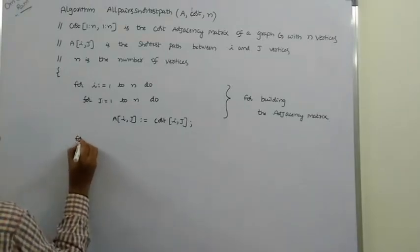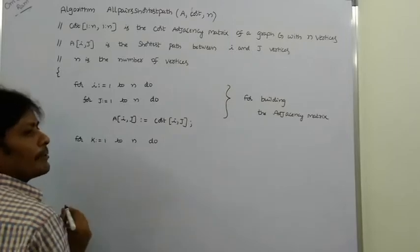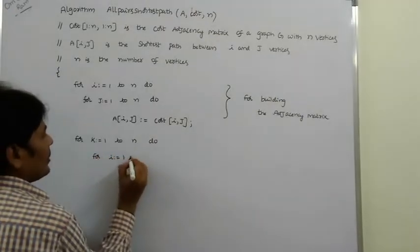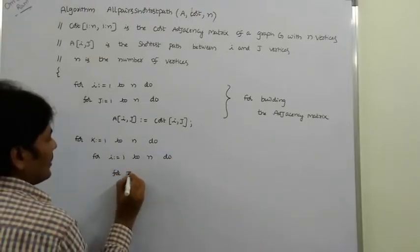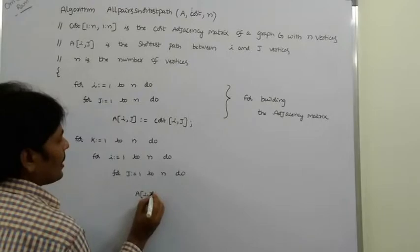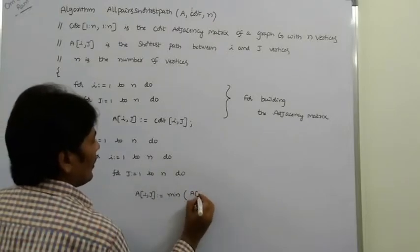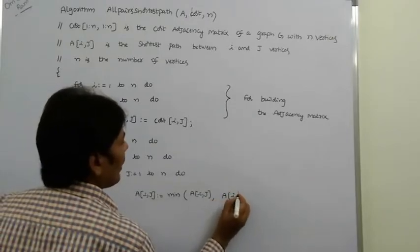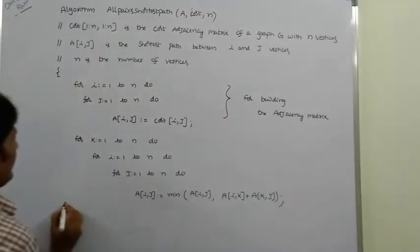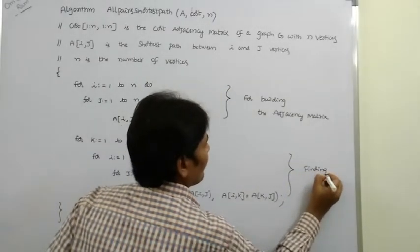This first section is for building the adjacency matrix. Next, for k equal to 1 to n, where k represents the intermediate vertex between i and j. Then for i equal to 1 to n, for j equal to 1 to n: A[i, j] = minimum of A[i, j] and A[i, k] plus A[k, j]. This is the core formula for finding the shortest path between every pair of vertices.